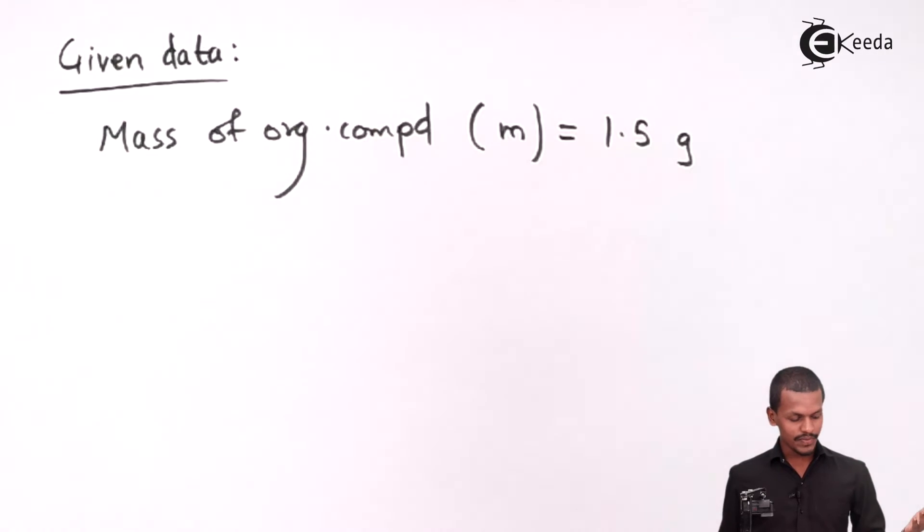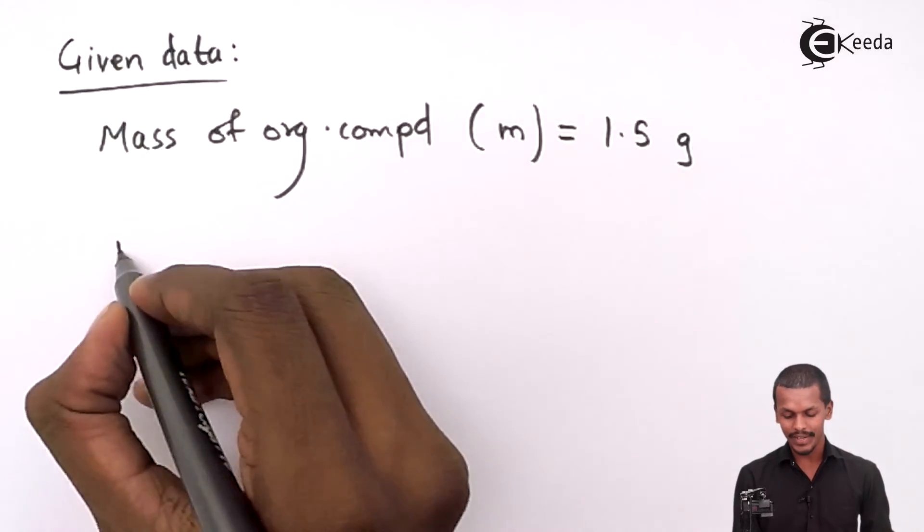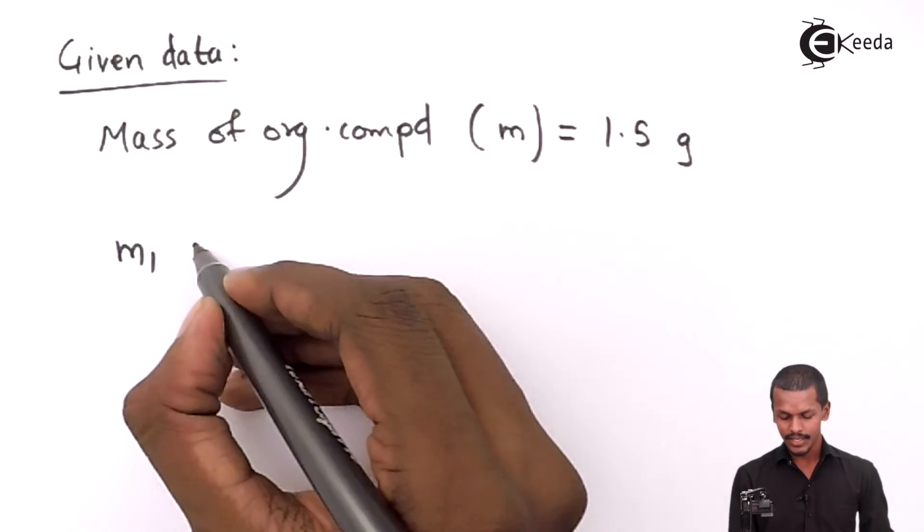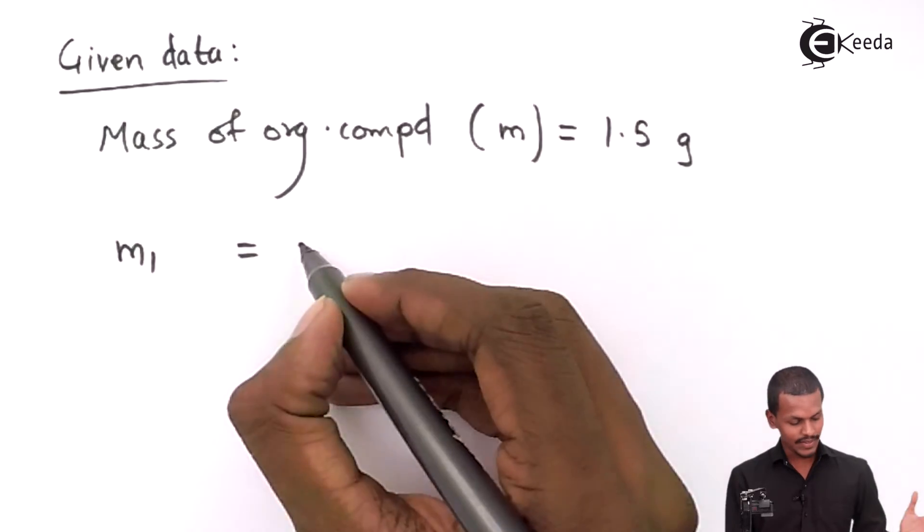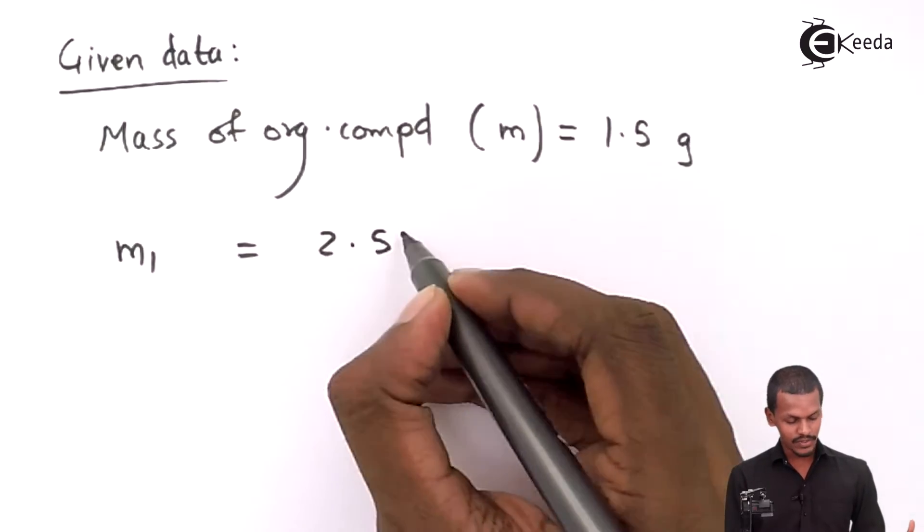The mass of Mg2P2O7, which we'll call M1, is given as 2.509 grams.